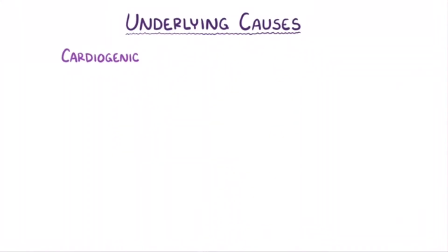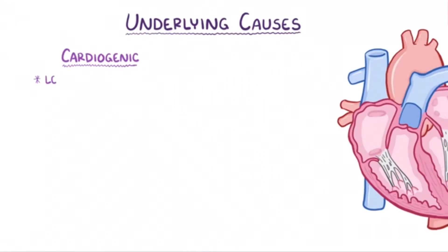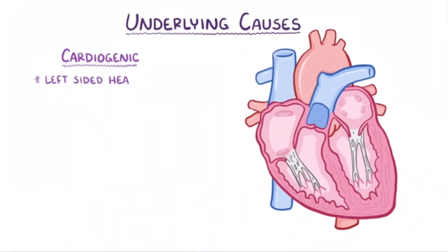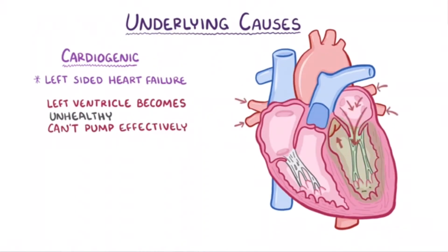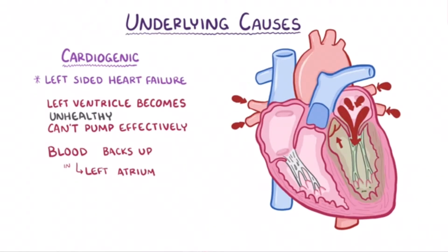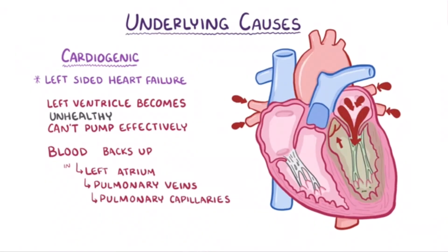The most common cardiogenic cause is left-sided heart failure. In left-sided heart failure the left ventricle becomes unhealthy and can't pump effectively, which means that blood starts to back up into the left atrium, and then the pulmonary veins and pulmonary capillaries.